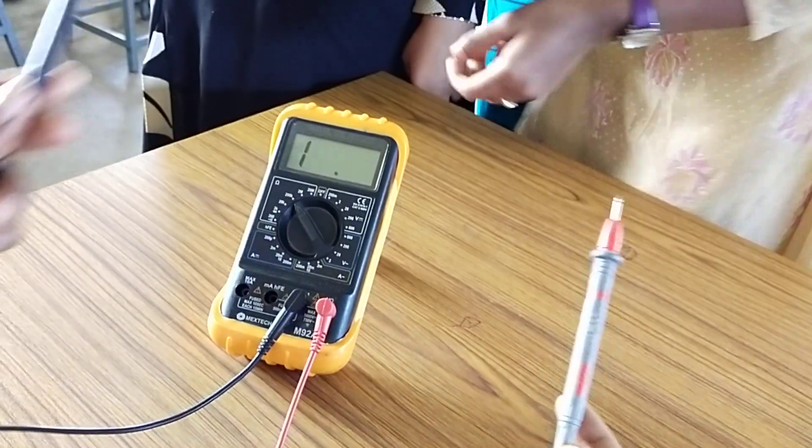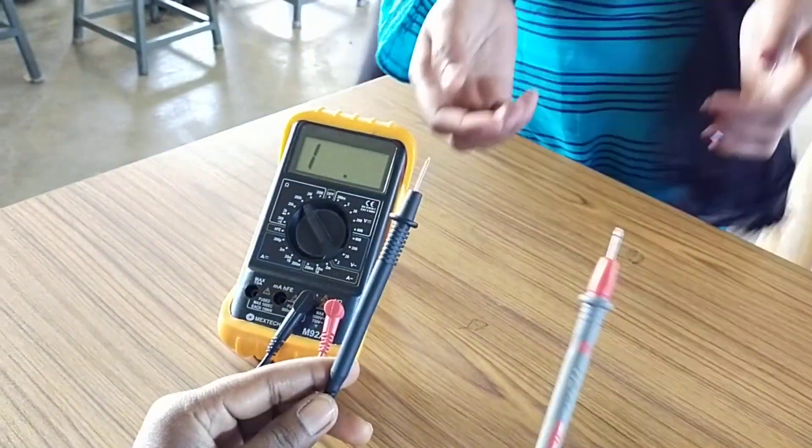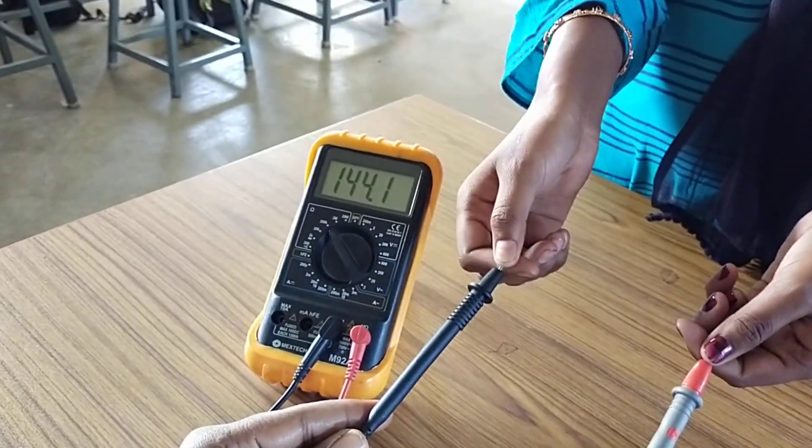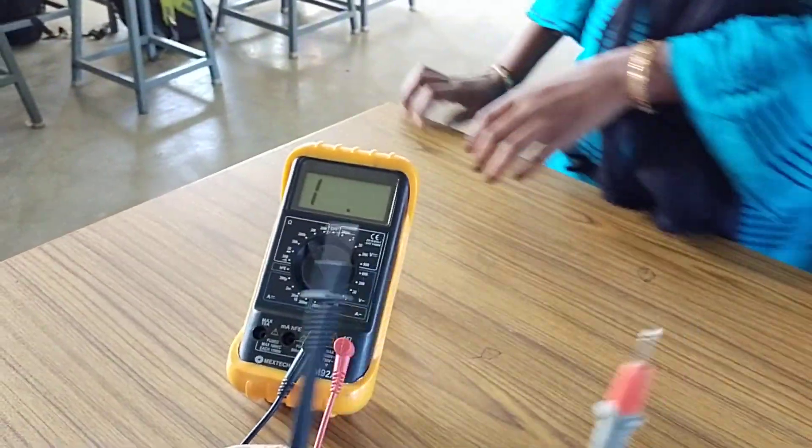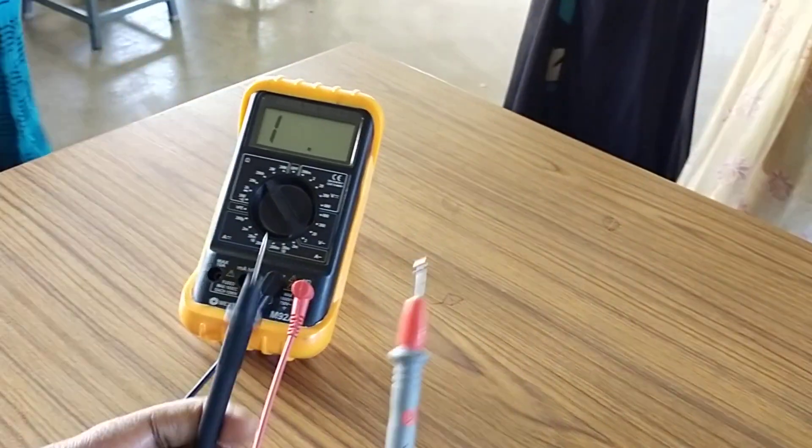160 kilo ohm. Next. 160 kilo ohm. It is 160 kilo ohm. Again same, 155 kilo ohm. The resistance can vary from boys to girls.